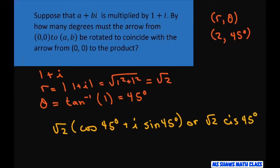So all that means is that multiplying by 1 plus i rotates the arrow by 45 degrees because we're going from (0, 0) to (a, b). So there's your 45 degrees. If we're going from (0, 0) to (a, b), this is your arrow here, you're just rotating it 45 degrees.